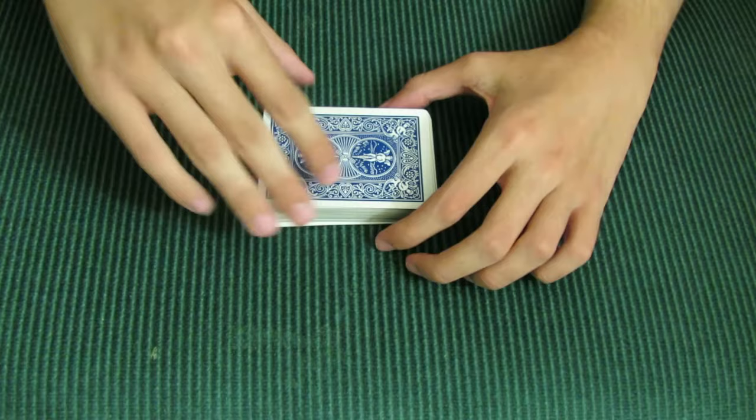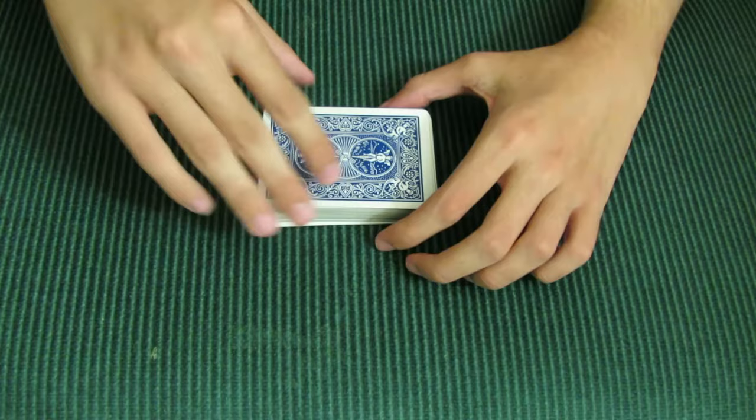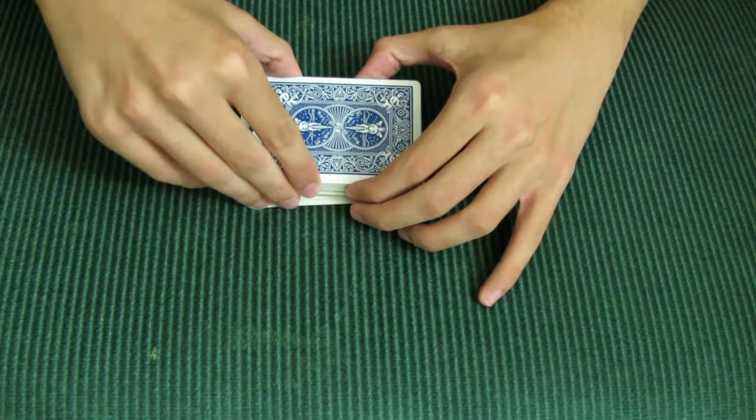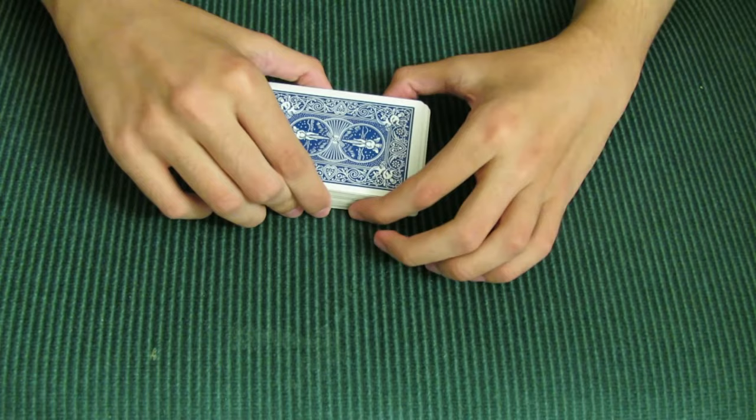Alright, so the second part is just a false cut. So you're going to show here's the ace, put it back on top, take the bottom third, put it there, take the middle third like that.